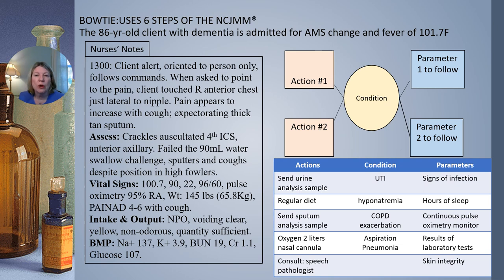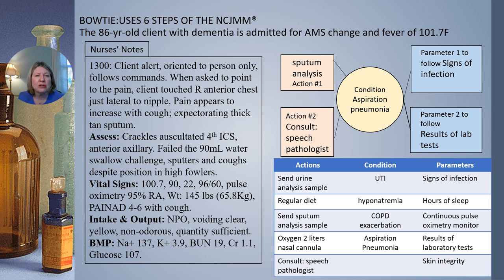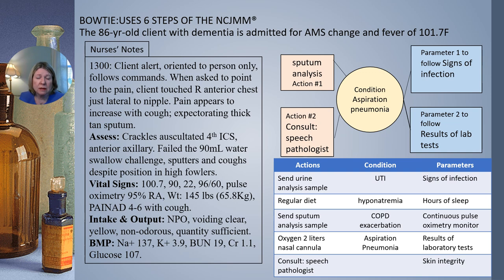Our condition is aspiration pneumonia — drag and drop that under condition. Action one: sputum analysis. We collect that thick tan sputum to isolate any specific bacteria that could guide treatment of this aspiration pneumonia. Action two: consult a speech pathologist. We performed the preliminary 90-milliliter water swallow challenge at bedside, and the client failed. The speech pathologist will come in with fiber optic equipment and varying liquid and food consistencies to assess whether the client aspirates with each swallow.